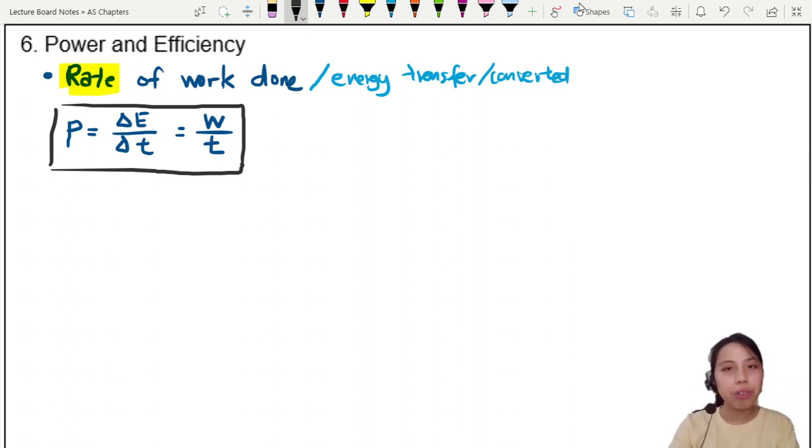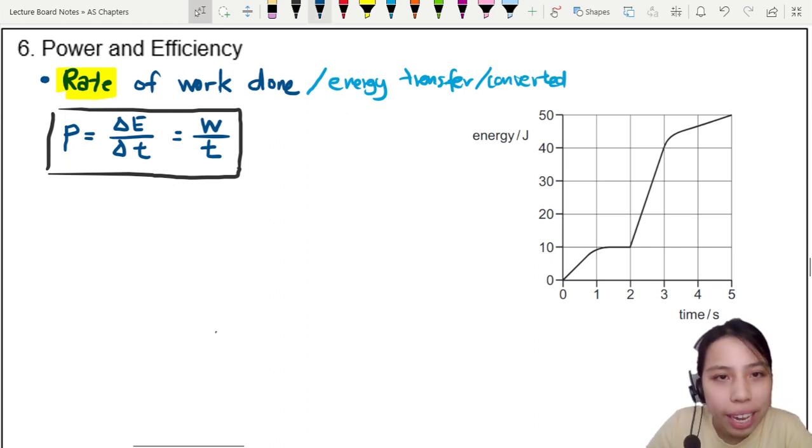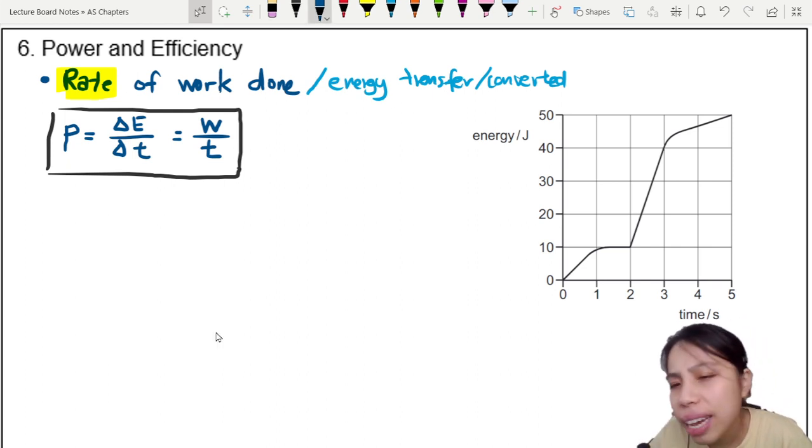Sometimes you will see energy time graphs, such as the one right here. So in this case, when you see an energy time graph, and I ask you, where is the maximum power? The first thing you should remember is rate of work done. What does it mean to have a rate of work done?